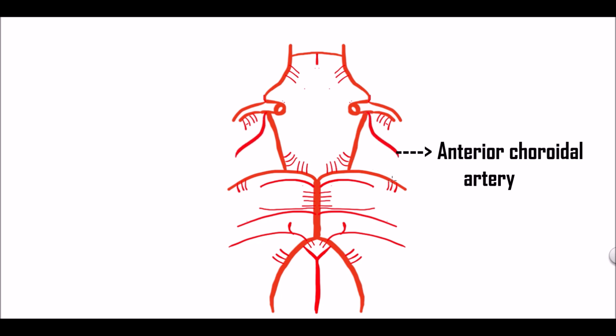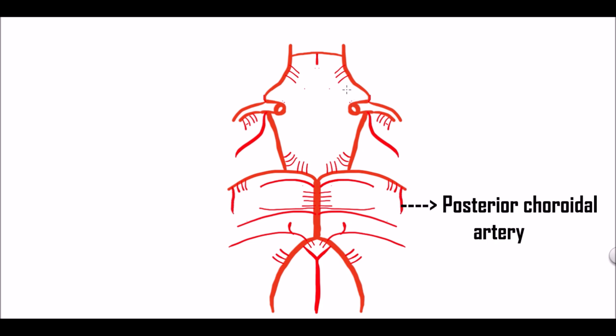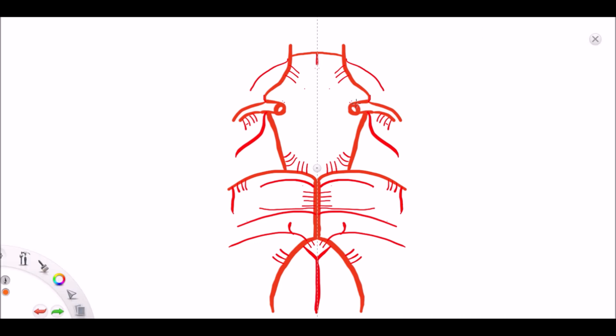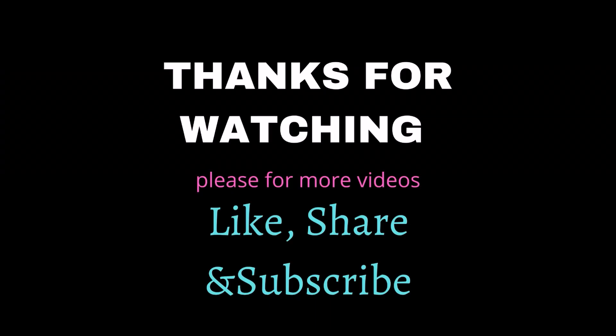Now let us see the choroidal branches. This one is the anterior choroidal artery from the internal carotid artery, and this one is the posterior choroidal artery from the posterior cerebral artery. These are the two choroidal branches. And this one is the recurrent artery of Heubner from the anterior cerebral artery. One more branch from the internal carotid artery is the ophthalmic artery. Here we can see this small branch from the internal carotid artery — this one is the ophthalmic artery.